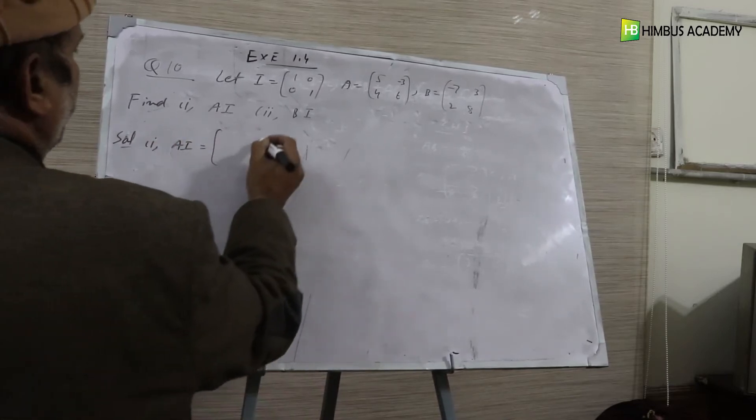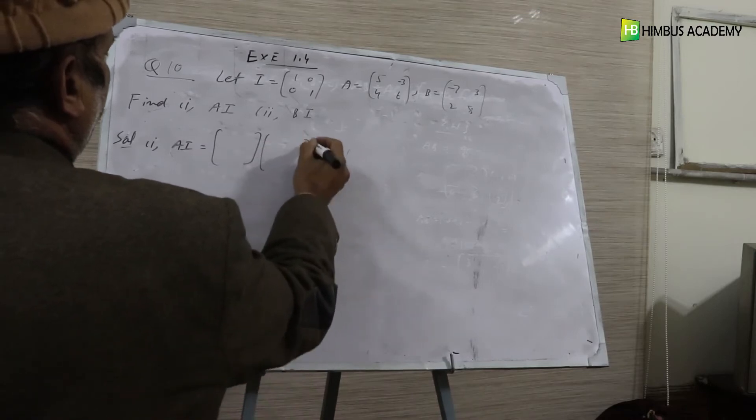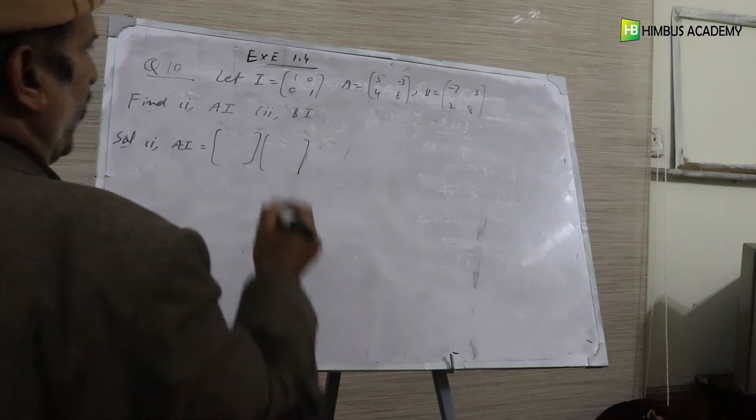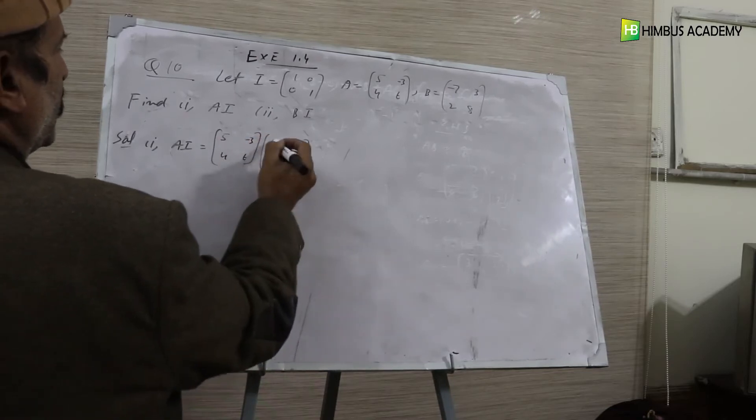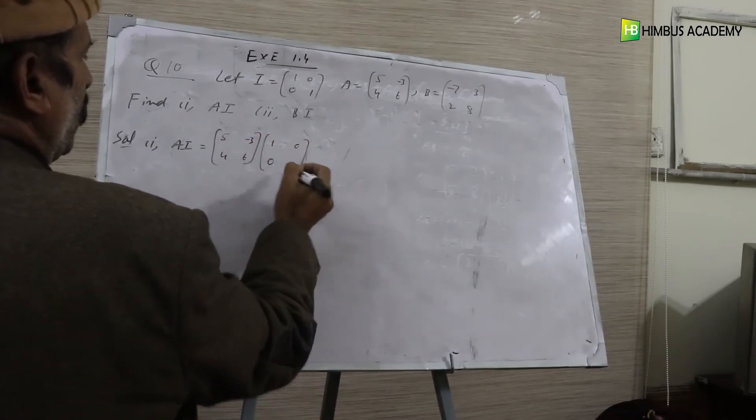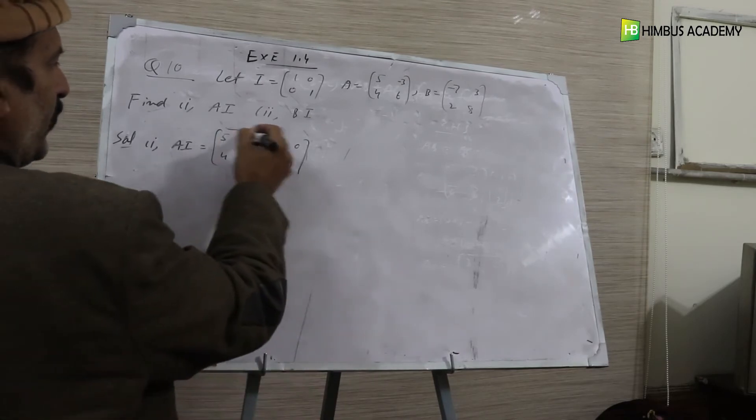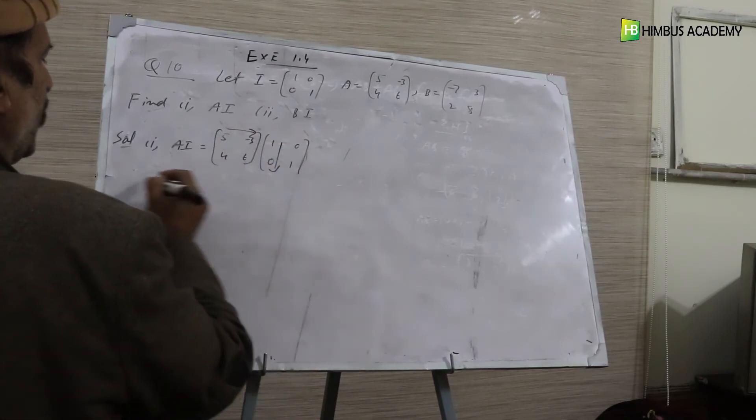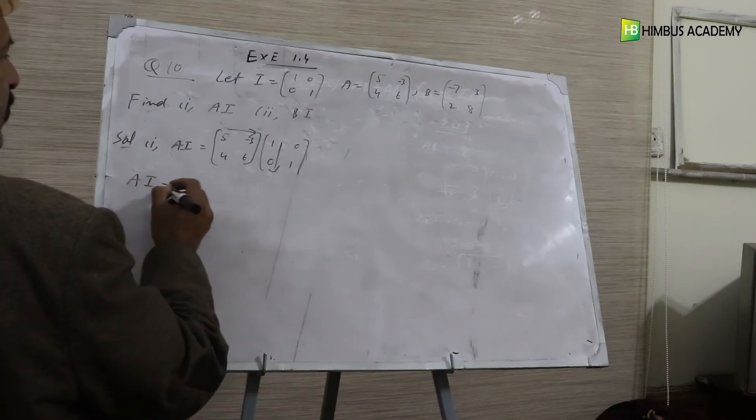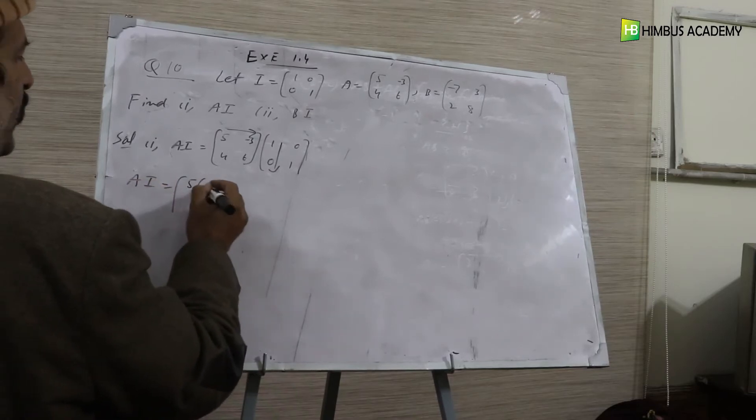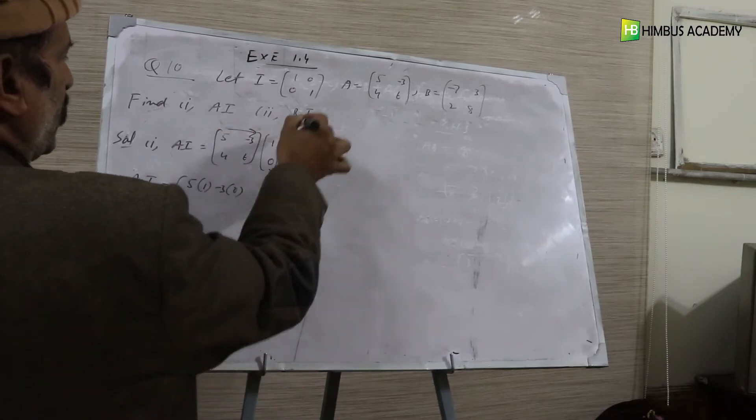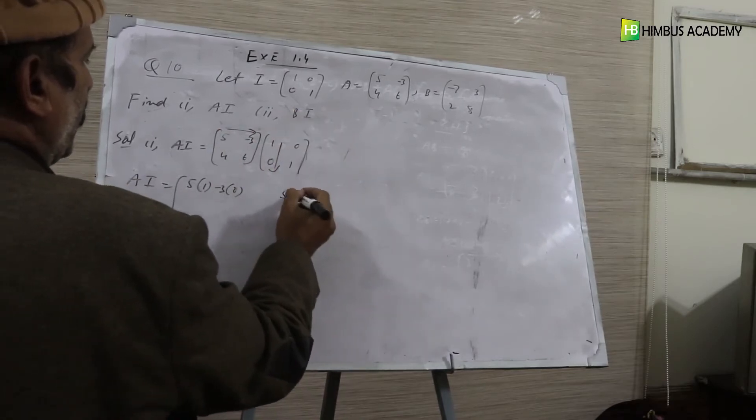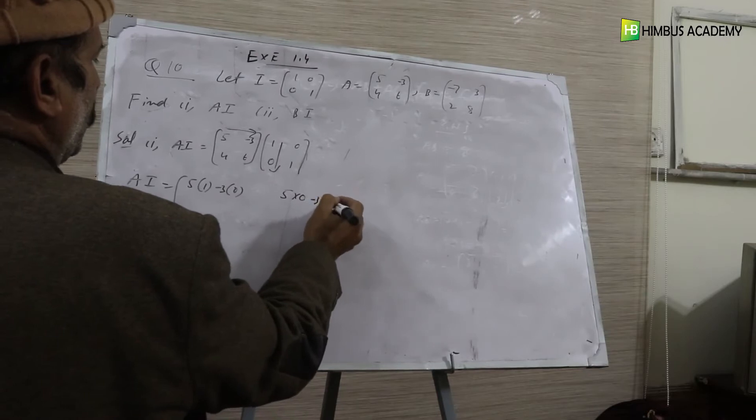This means multiply matrix A with matrix I. So 5 minus 3, 4, 6, times 1, 0, 0, 1. First row with first column: A, I equals 5, 1, 0, minus 3, 0, 0. First row with second column: 5, 0, minus 3, 1, 0.